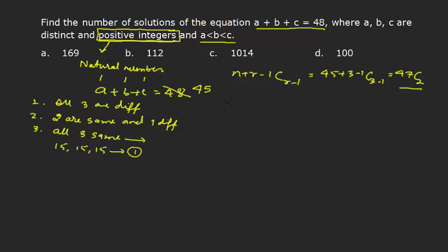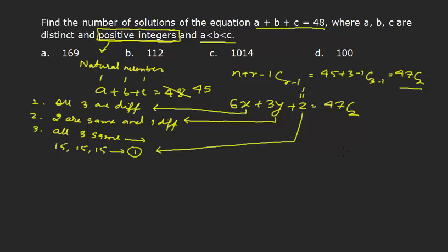I will have 6x + 3y + z = 47 C 2, where x is number of cases wherein all three are different, y is a case where two are same and one is different, and z is when all three are same. The value of z is 1, and 47 C 2 if you calculate it will be 47 × 46 ÷ 2, the solution would be 1081.